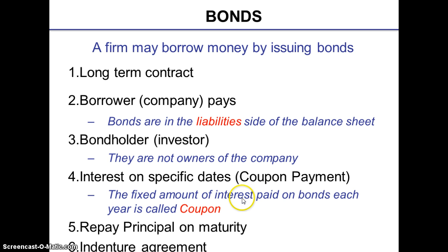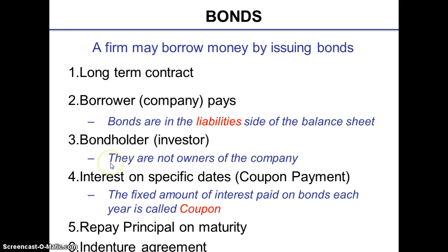The fixed amount of interest which is paid on bonds each year is called the coupon. Additionally, the corporation which issues the bonds shows the bonds on the liability side of their balance sheet. You should also be aware that the bond holders — who are the lenders or investors — are not considered as the owners of the company.